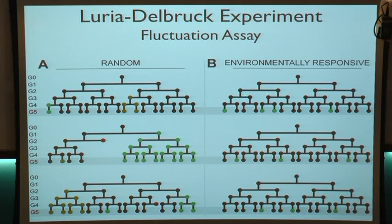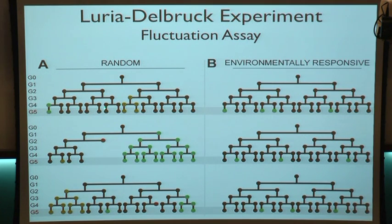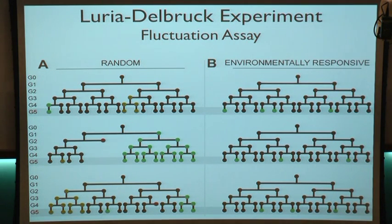In the most ideal situation, once the cells sense the environmental stimulus — indicated with a gray dash line — if the cells are really good at this game, then all of the mutations they generate will be beneficial. You can imagine scenarios where you'll still get some mixture of beneficial, neutral, or negative, but in the most ideal situation this is what you would get.